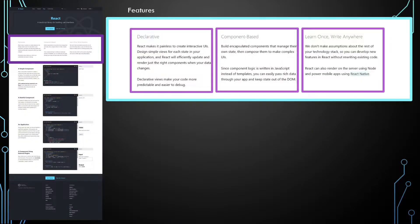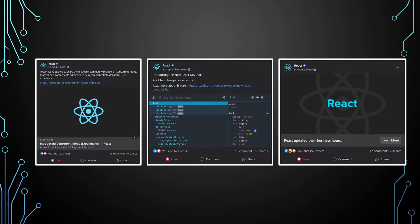If you see this part of the reactjs.org website, we can see in this section some features are mentioned and also inside that we can identify some individual components. Each of these components seems different from each other because their text is different, but the font size, color, background color, and every other property are the same. Similarly, these three Facebook posts look like a similar structure but their content is different.